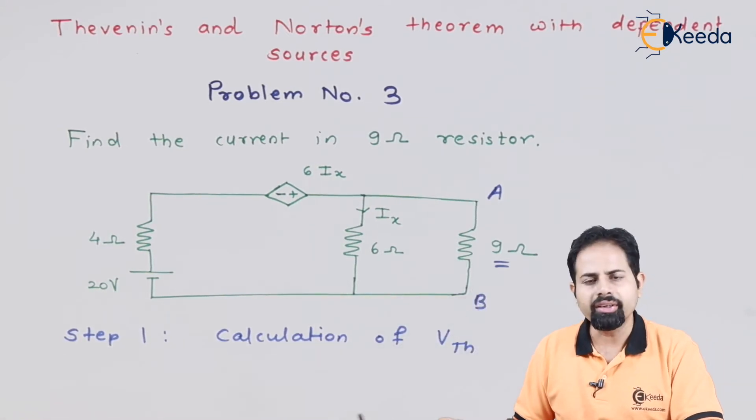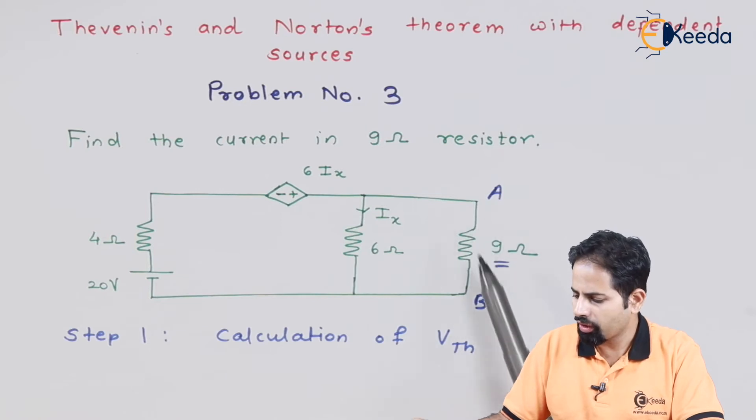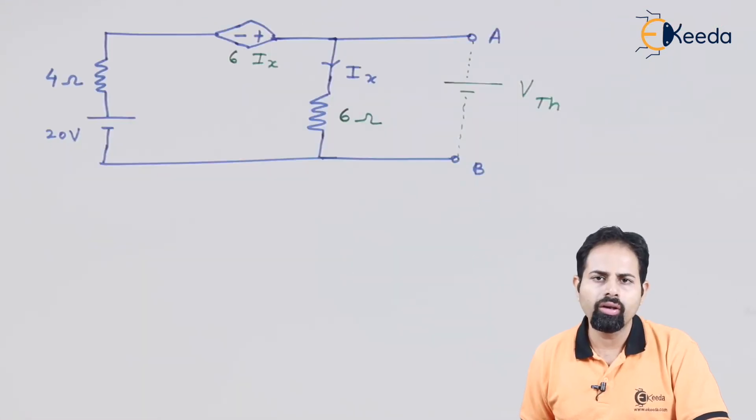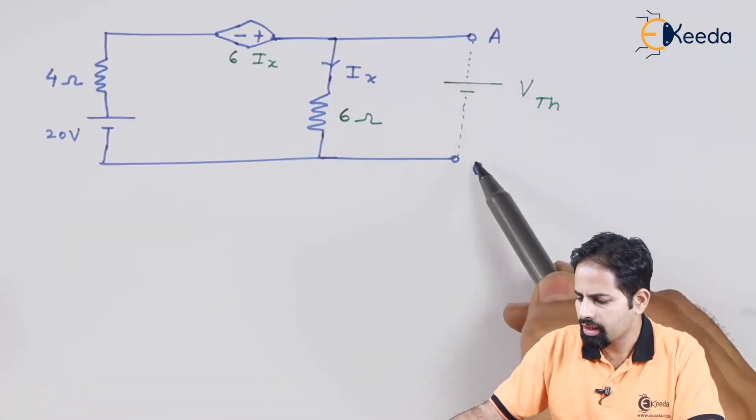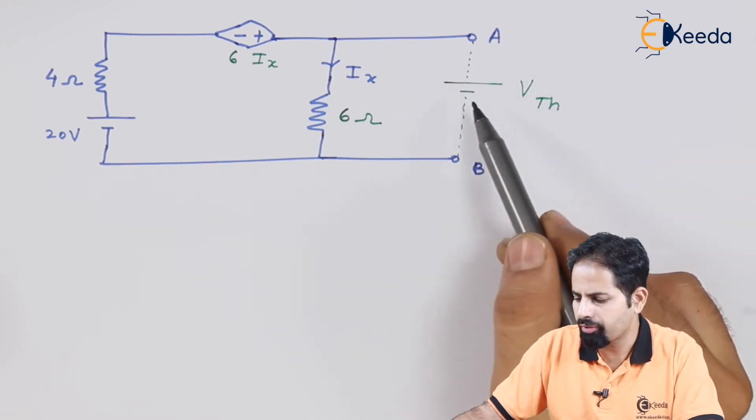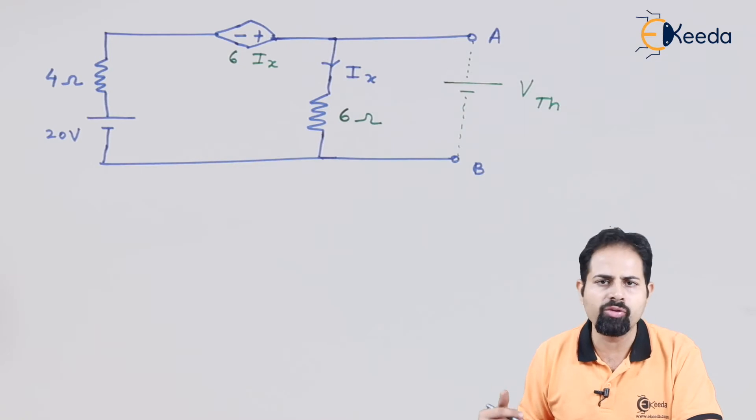Now we will redraw the circuit because for Vth, we don't require this 9 ohm resistor. So here I have drawn the circuit again. As usual, these A and B terminals are open circuit. But I have put there Vth, a voltage source which is to be calculated.